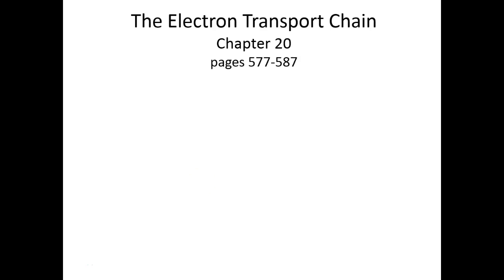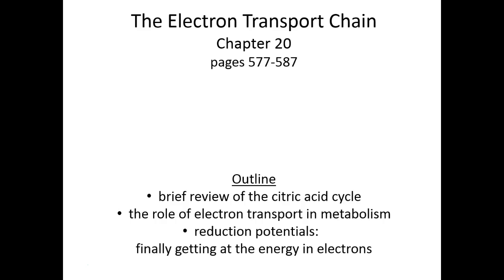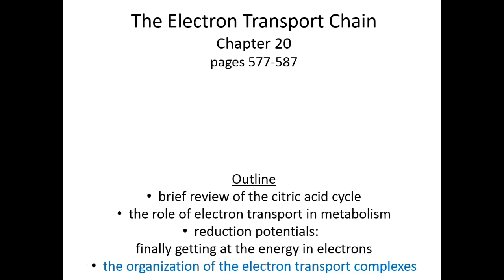We're ready. This is the last chunk of the electron transport chain where we talk about the chain specifically. I've already given you a general overview of the citric acid cycle, the bird's eye perspective of the electron transport chain, and we talked about reduction potentials in the last chunk — how and why we can get negative delta G's out of these redox reactions. So let's talk about the electron transport chain itself.